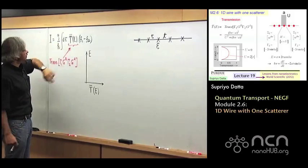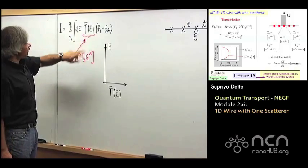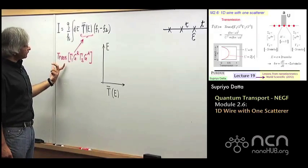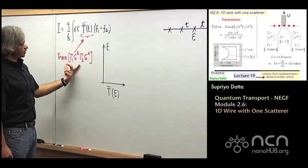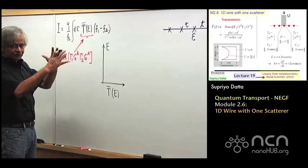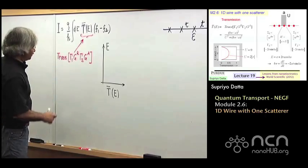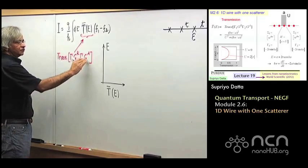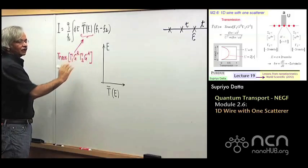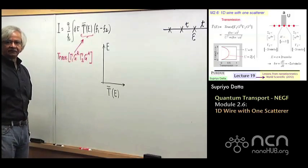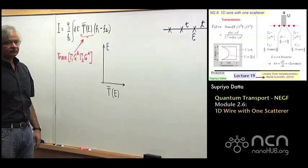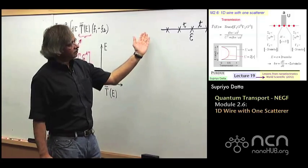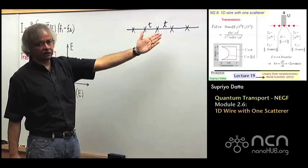We now have a quantum expression for the transmission from this quantum model, which is the trace of gamma 1, G, gamma 2, G_A. This is the quantity that we'll be calculating for a simple one-dimensional conductor.